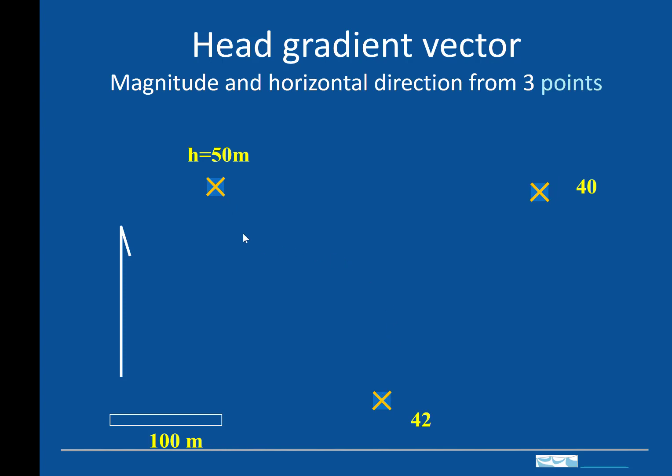So what we need to do is find the point between the high and the low that corresponds to this value of a head of 42 meters. So we'll do that by interpolating between these points.